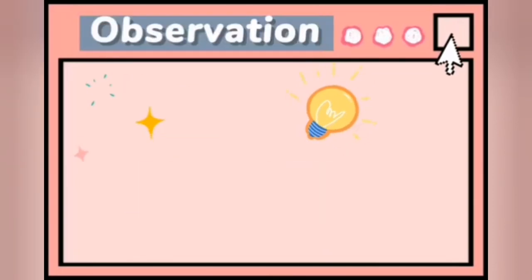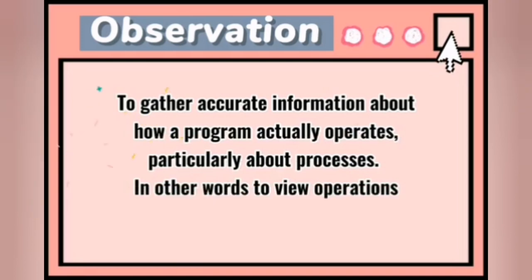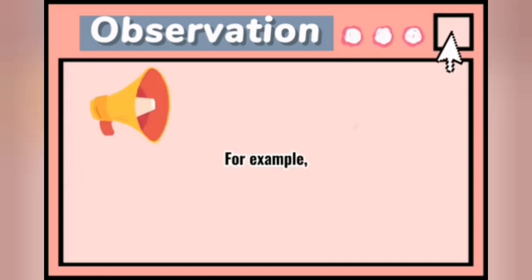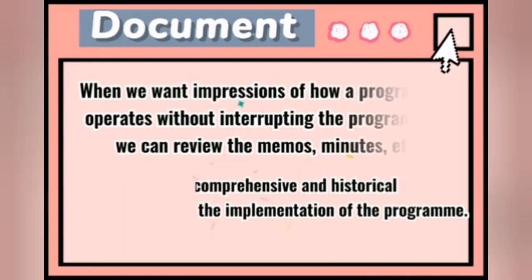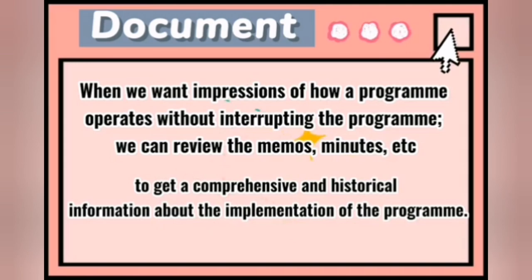Next is observation. Observation is to gather accurate information about how a program actually operates, particularly about processes — in other words, to view operations of a program as they are actually occurring. Lastly, the document. When we want an impression of how a program operates without interrupting the program, we can review the memos, minutes, etc., to get comprehensive and historical information about the implementation of the program. However, we should be quite clear about what we are looking for, as there may be a large load of documents.